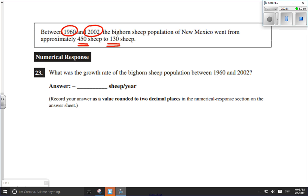Obviously, this population has declined and our answer is going to be negative. As a matter of fact, right in the answer space, they've already given us the negative sign. So what was the growth rate of the bighorn sheep population between 1960 and 2002?